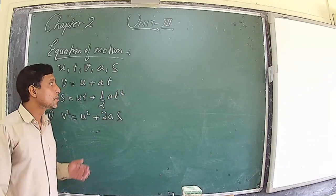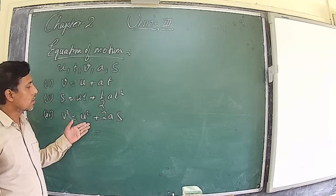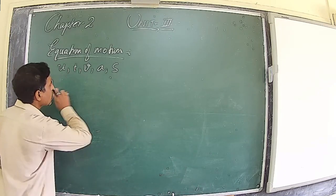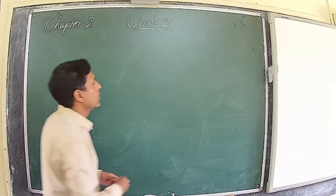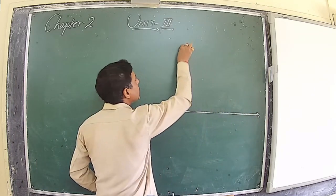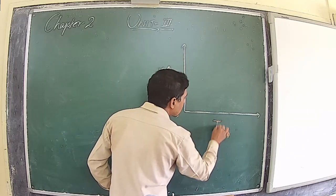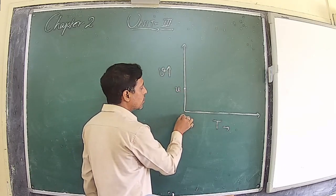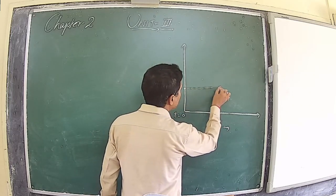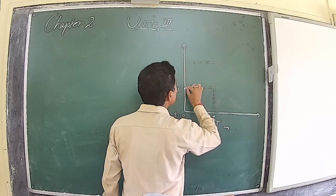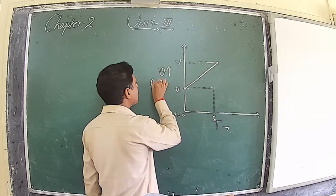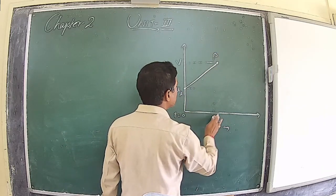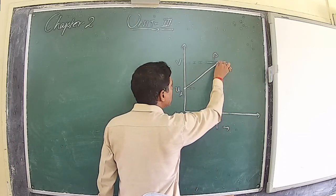In this unit we will learn how to derive these equations of motion graphically, because from an examination point of view, questions are asked to derive the first, second, or third equation of motion graphically. To derive all three equations, we need to draw a graph between velocity versus time. Let us consider a body that was already having some velocity u at time t = 0, and after some time t its velocity becomes v meters per second.